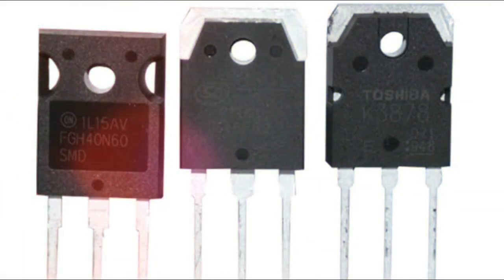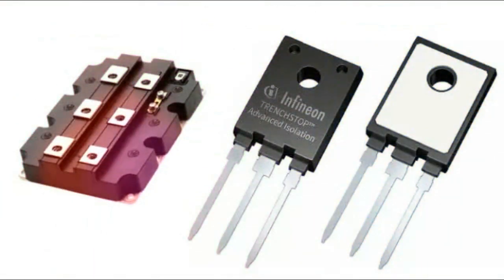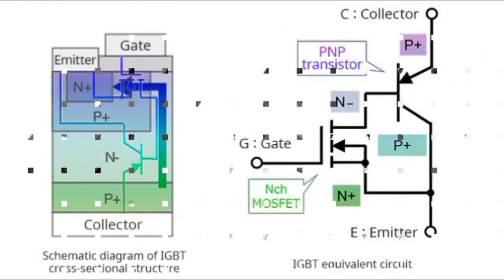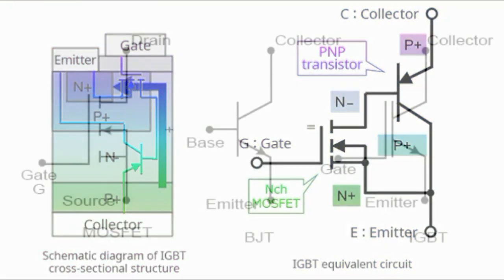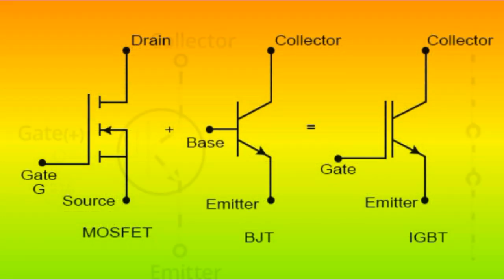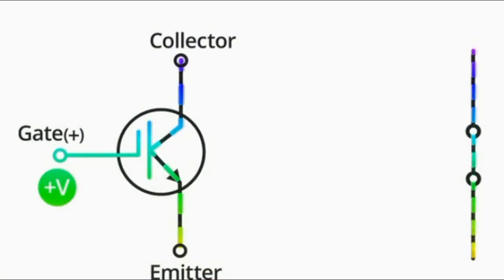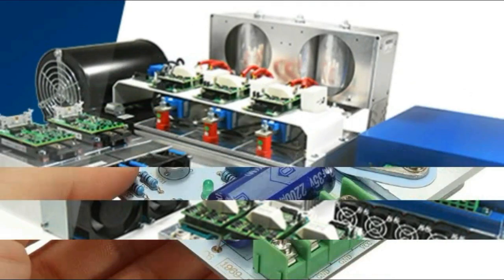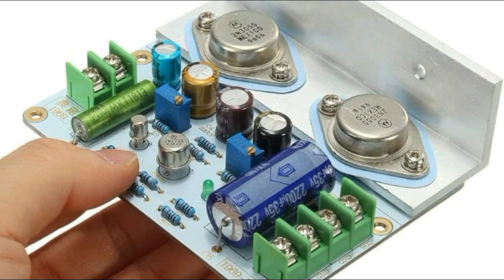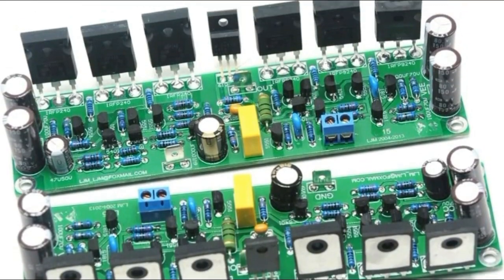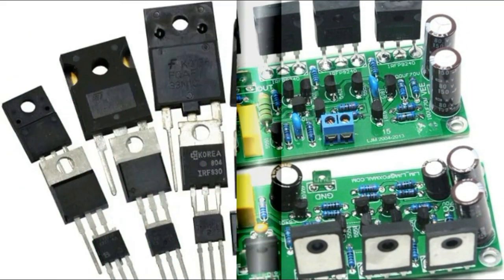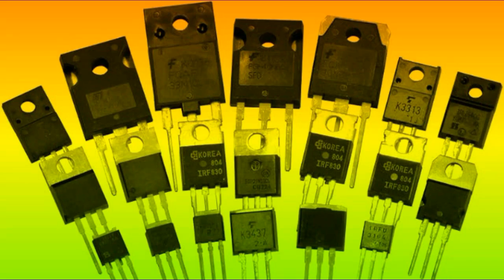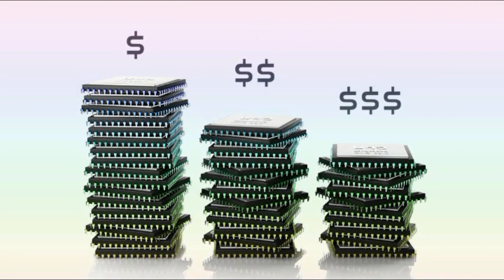As the name suggests, the IGBT is equipped with isolated gate MOSFET technology and also has a common bipolar transistor. The result is output switching and conduction characteristics of a bipolar transistor, but it is a voltage-controlled device like the MOSFET. IGBTs are widely used in power electronics applications such as inverters, converters, and power supplies where MOSFETs and BJTs do not perform well. High voltage and high current bipolar transistors are available, but their switching speed is low. Although the switching speed of power MOSFETs is higher, the high voltage and high current components are expensive.